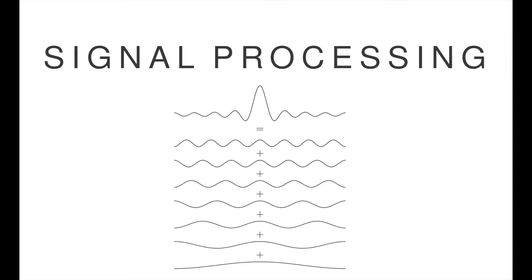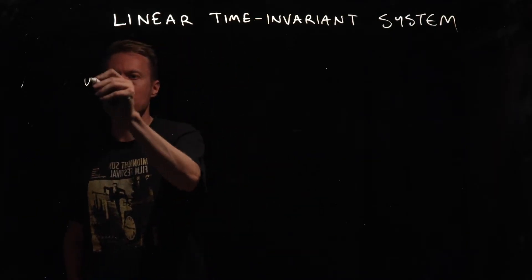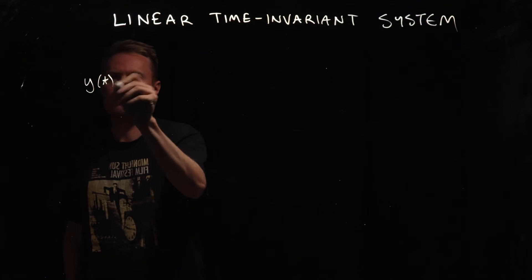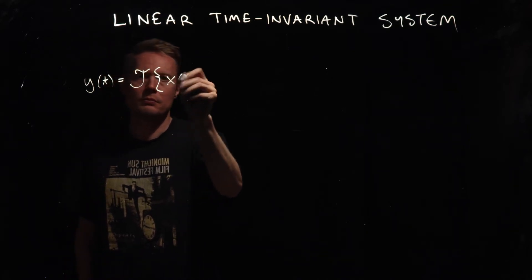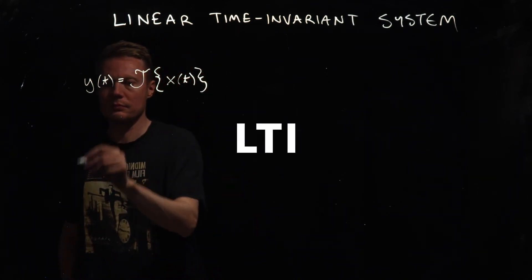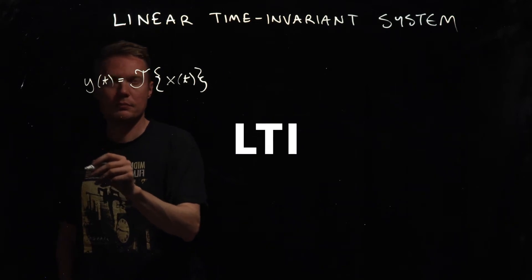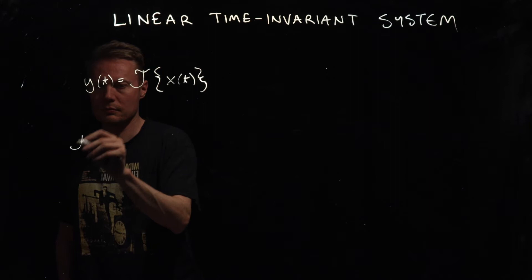Signal processing systems are classified based on their mathematical properties. The two most important properties are linearity and time invariance. If a system is both linear and time-invariant, it is called a linear time-invariant system, sometimes referred to just by the acronym LTI. Such systems have beneficial mathematical properties that make the analysis and design of such systems very straightforward.